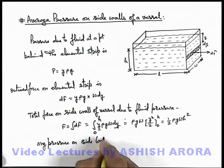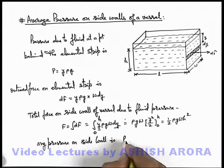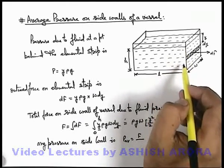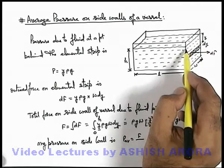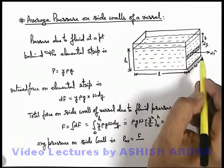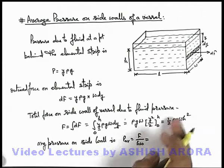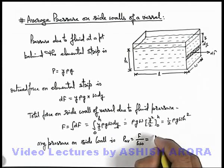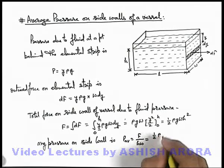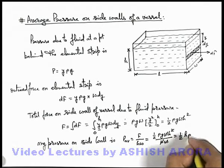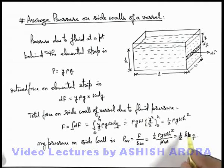The average pressure on the side wall is the total force divided by the total area of the wall in contact with the fluid, which is h·w. So average pressure = F / (h·w) = (½·ρ·g·w·h²) / (h·w). Here w and h cancel out, giving average pressure = ½·h·ρ·g.